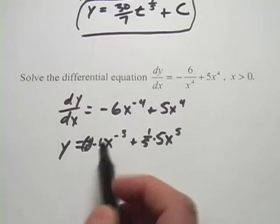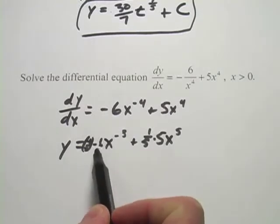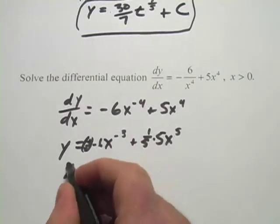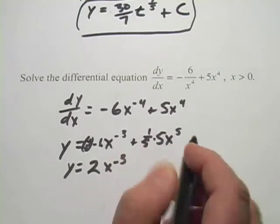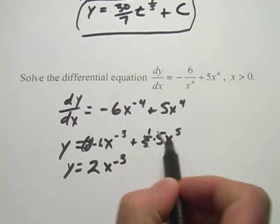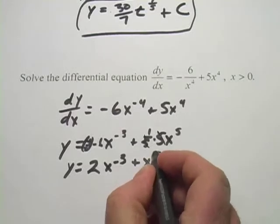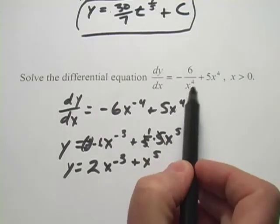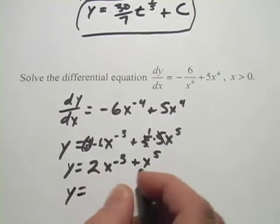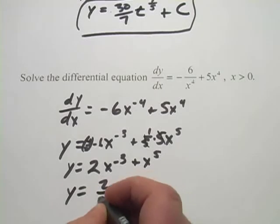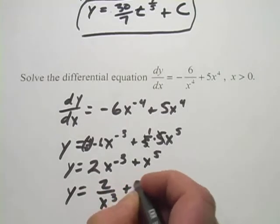And now we can do a little simplifying. Negative one-third times a negative six is going to be a positive two. And then we have x to the negative three. And the one-fifth and the five just cancel, so we get plus x to the fifth. And then since we were given in this rational notation in the first place, we might as well put it back. So y equals two over x to the third plus x to the fifth.